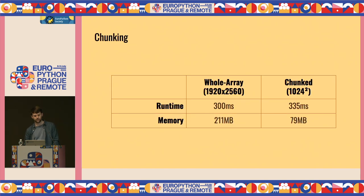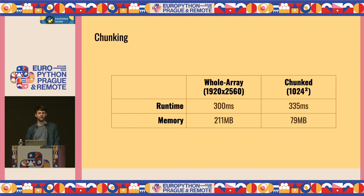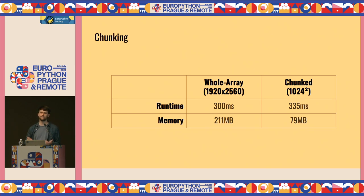How does this compare? With the original ~2000×2500 pixel image and a chunk size of 1024, we have about 10% more runtime — slightly slower due to the tiling overhead — but we save memory. Most importantly, memory no longer grows as much with input size, so we can handle larger inputs. You can trade off runtime for even less RAM by choosing smaller chunk sizes.